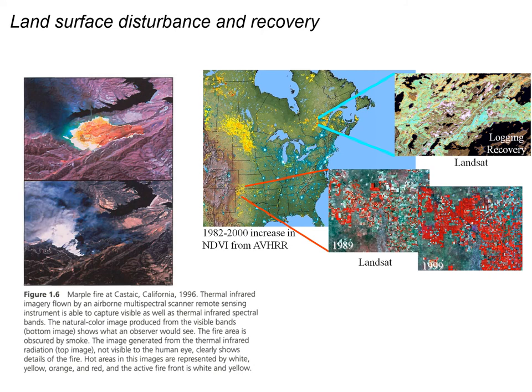Another application is land surface disturbance and recovery: remote sensing is used by the US Forest Service, both airborne and spaceborne, to map new fires in remote areas where people aren't seeing the fires themselves, and also to monitor fires during suppression activities to determine where to devote resources to contain them.